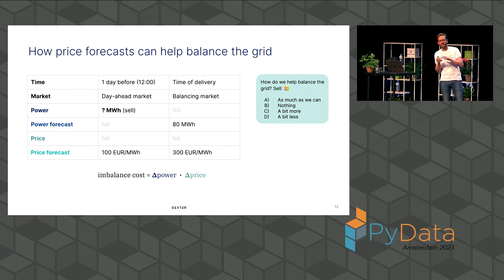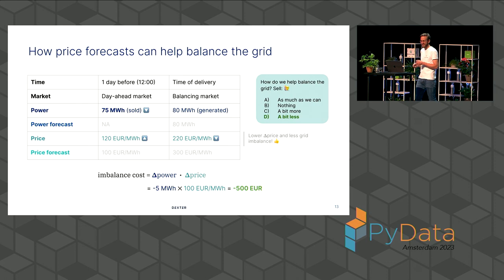Show of hands. Who thinks we should sell as much as we can? Nobody? Who thinks we should sell nothing? Yeah, I see a couple of hands. Yeah, this is interesting. I'll get back to that. Who thinks we should sell a little bit more? A little bit more. And a bit less. Who thinks we should sell a bit less? I see a lot of hands now. That's good. That's correct. That's the correct answer. And I'll get to why B is not the correct answer in a moment. Because that's pretty interesting in itself.